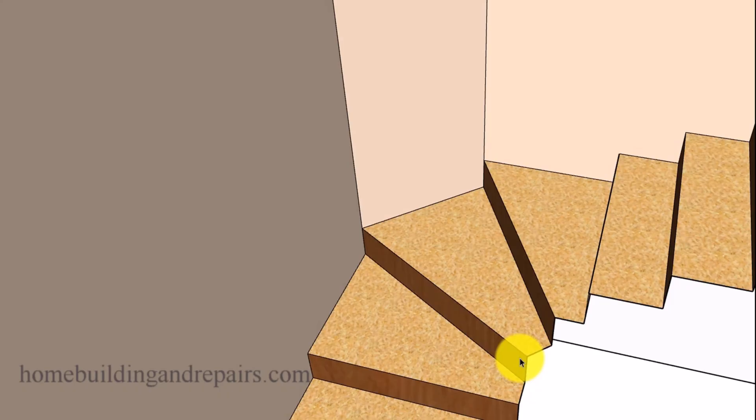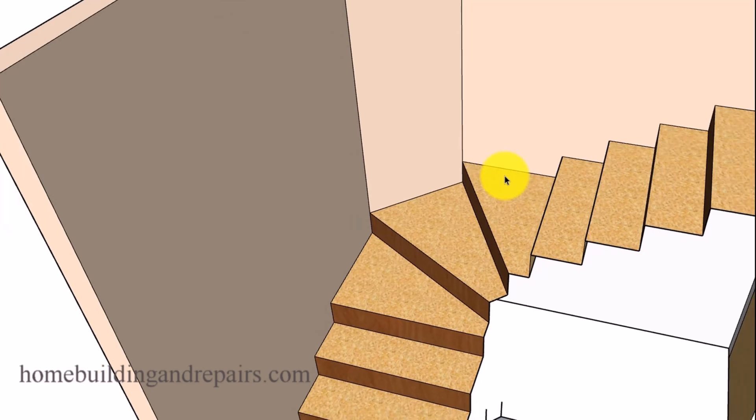They go and they lay everything out and they build everything to this and then they add risers to it. They might add finished materials. Some one by fours, one by sixes, one by eights for the risers. And then put a nosing on it and add materials.